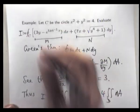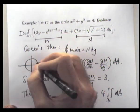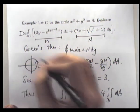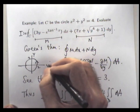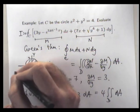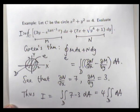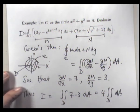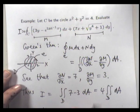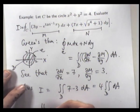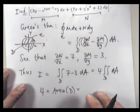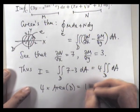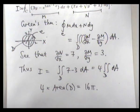So I guess I should draw a picture here. So it's just 4 times the area of D. So it's going to be something like 16π. Okay.